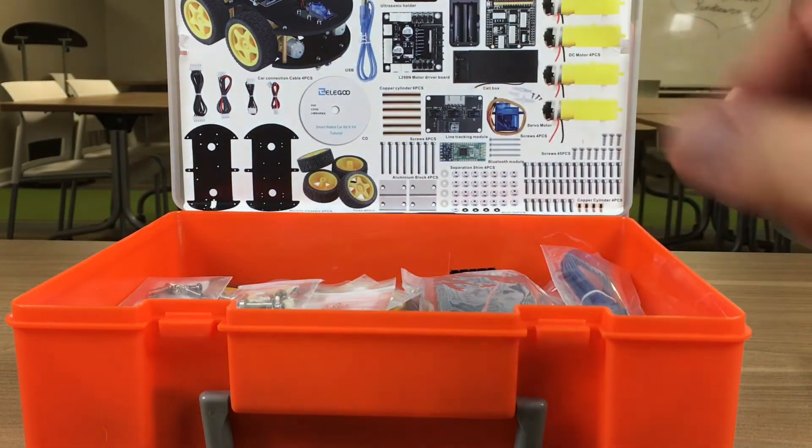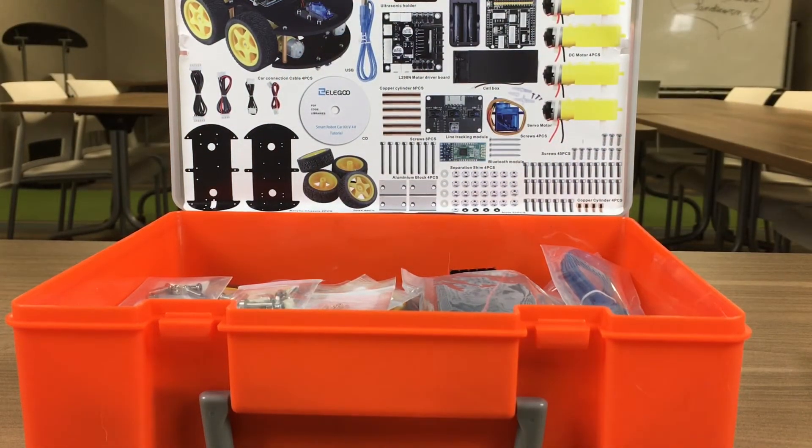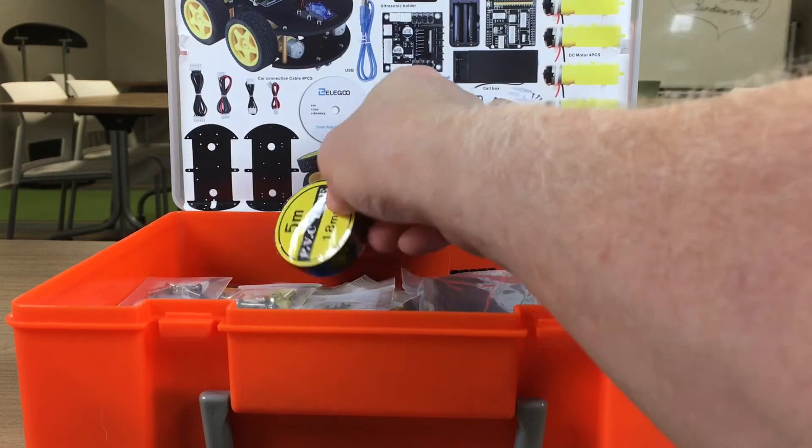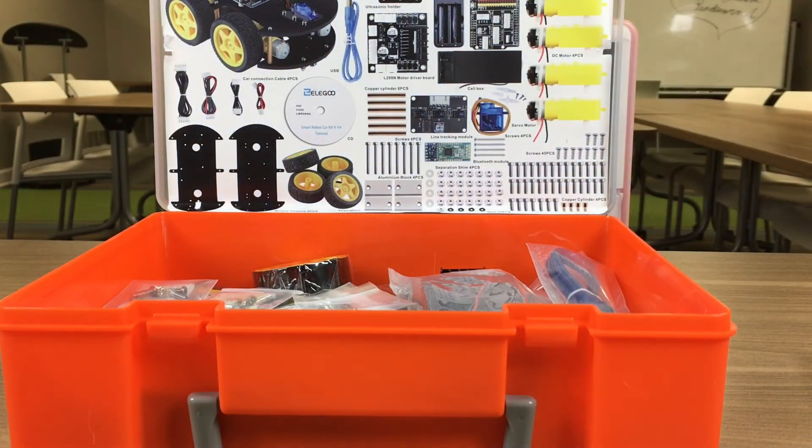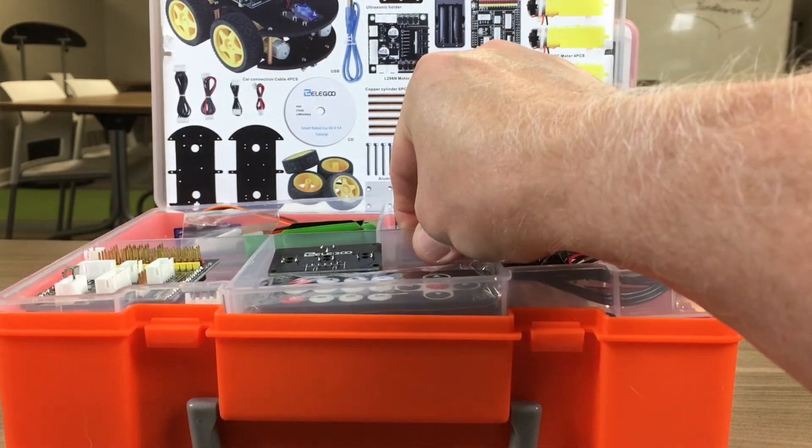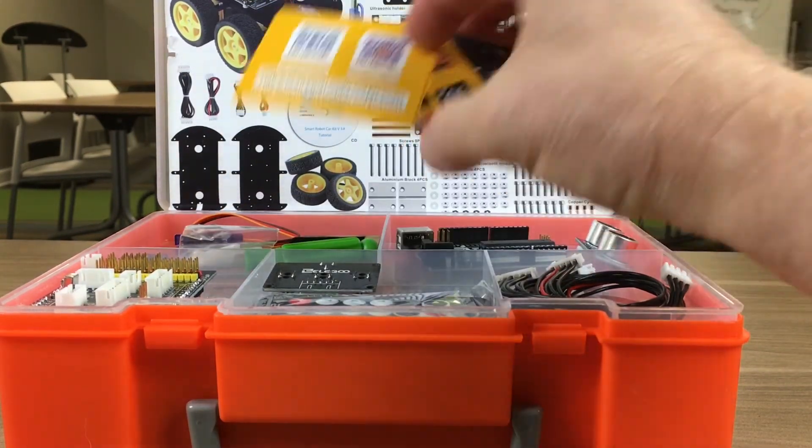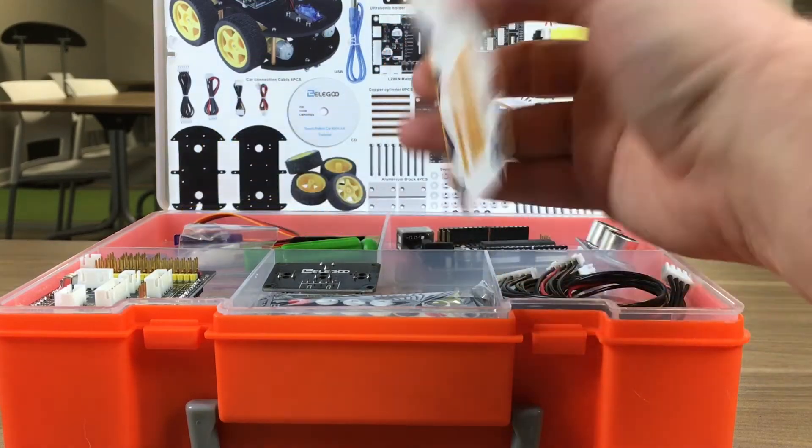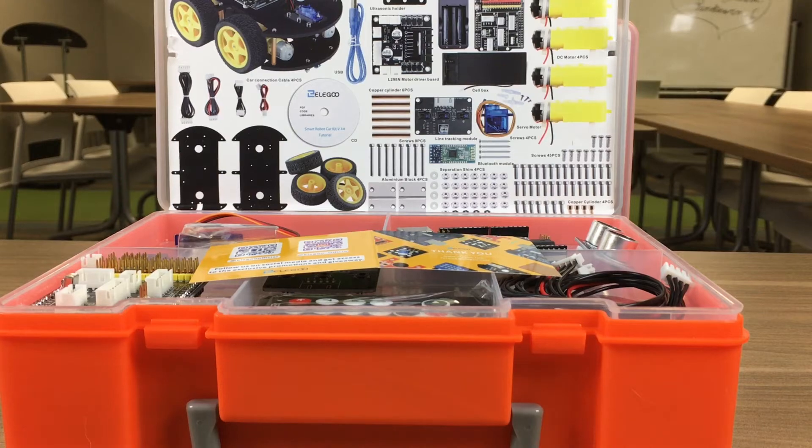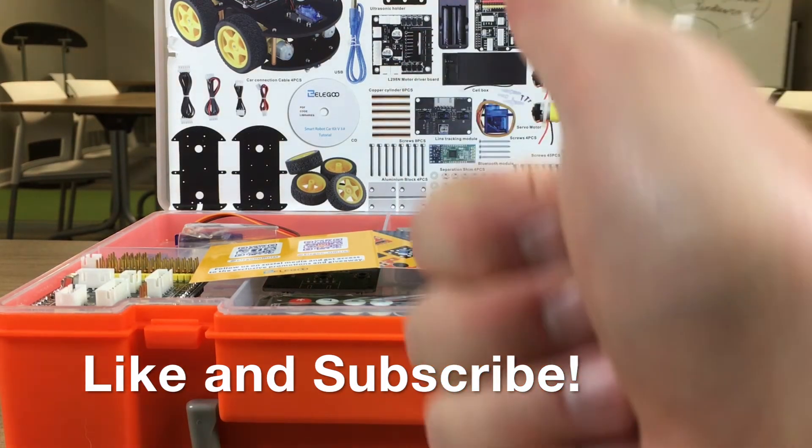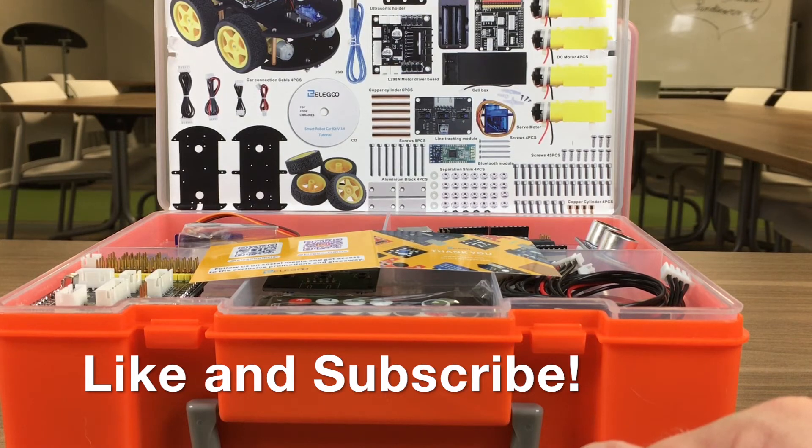I almost forgot—it also includes a roll of black electrical tape. I'm sure there's going to be some part of the project where you're going to need to secure some things down, so they even thought of that. They even included some electrical tape and a little introduction card there with how to find them on Facebook and on Instagram. So everything that you really need to get started. Hope you found this video to be useful—give us a thumbs up and subscribe so you'll know when we release future videos on building this kit. Thanks for watching.